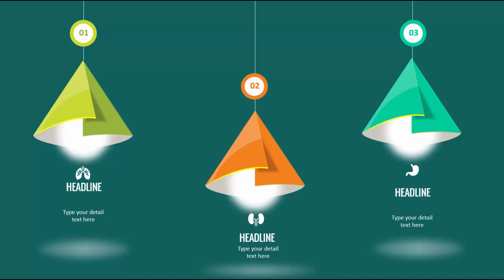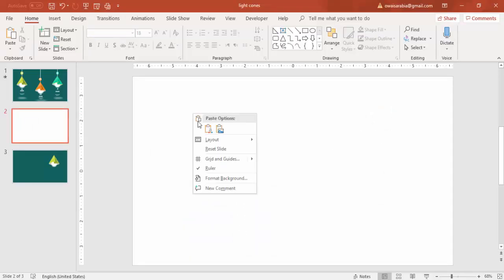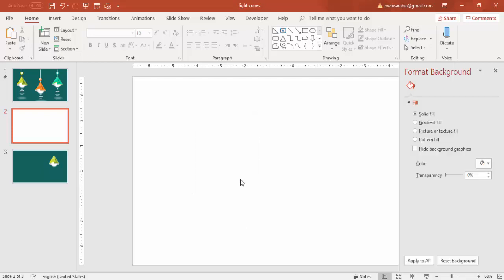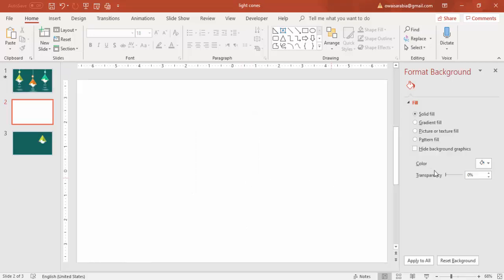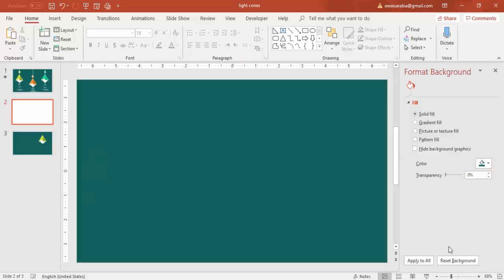So let's see how to create this beautiful infographic slide in PowerPoint. Add a new slide and change the slide background — right mouse click, go to Format Background, and select a dark teal color.